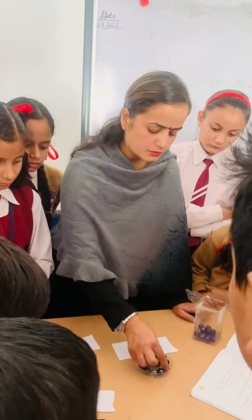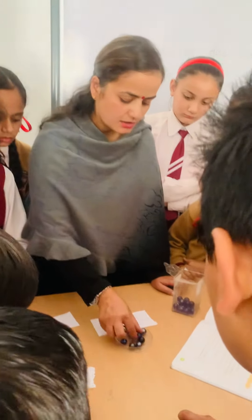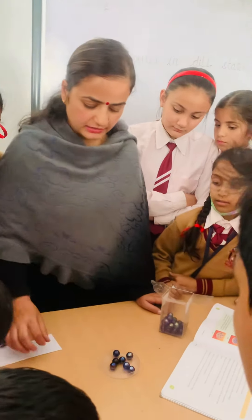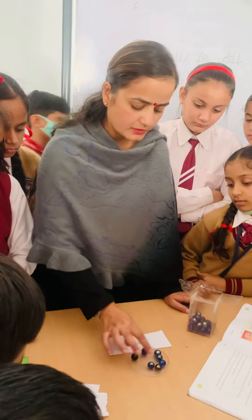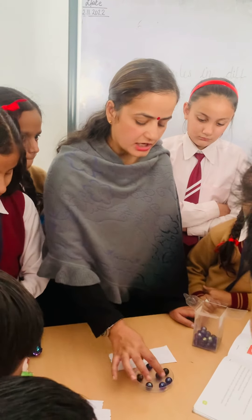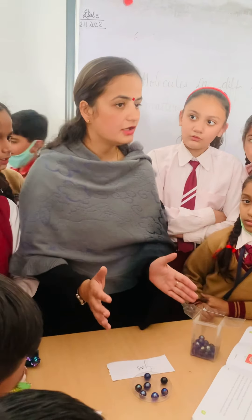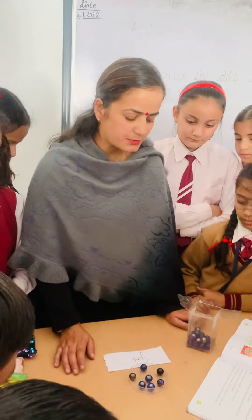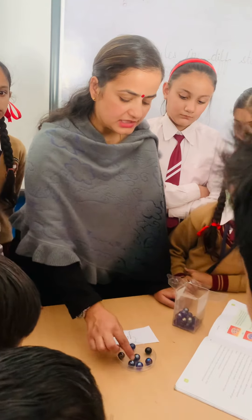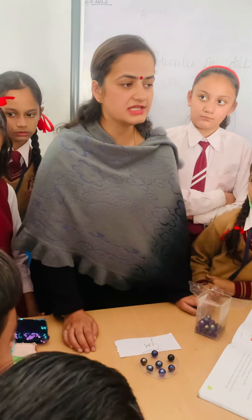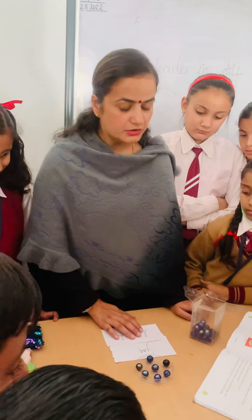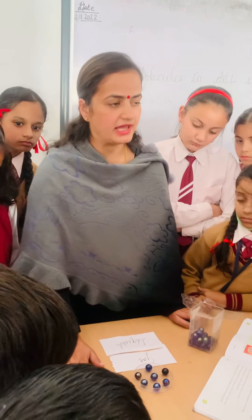Now I remove more marbles, or you can say molecules. These molecules are easily movable — they can move very easily — because the space between these molecules, or marbles, is very, very loose. This is the arrangement of gas. The forces between these molecules are very, very less; the force of attraction is very, very less. That's why gases and liquids have no definite shape, whereas solids have a definite shape.